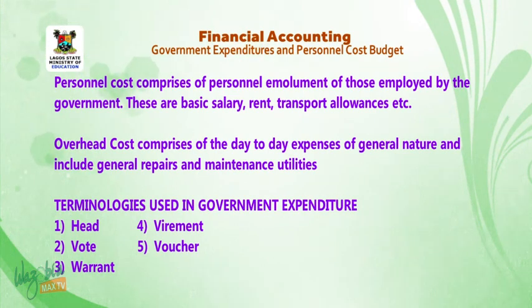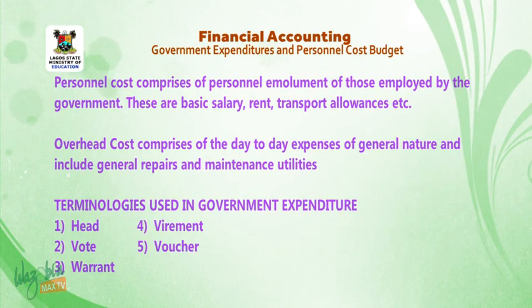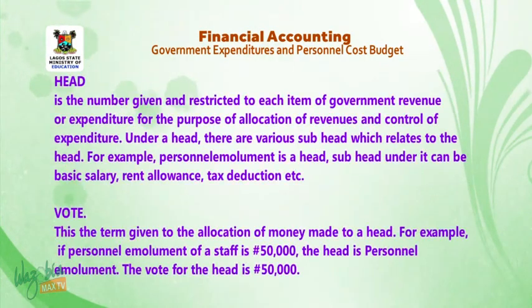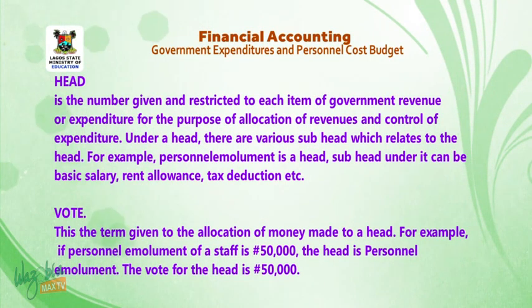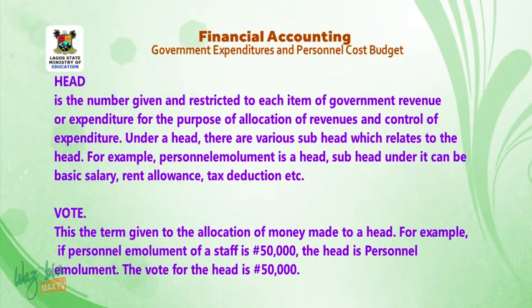Terminologies used in government expenditure: 1. Head. 2. Vote. 3. Warrant. 4. Virement. 5. Voucher. Head is the number given and assigned to each item of government revenue or expenditure for the purpose of allocation and control of expenditure. Under a head, there are various subheads which relate to the head. For example, personnel emolument is a head; subheads under it can be basic salary, rent allowance, tax deduction, etc.